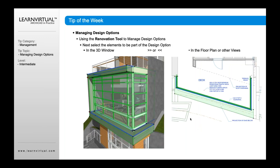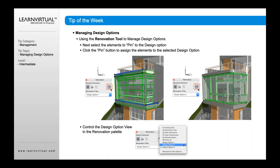Now, select the elements to assign to a design option — you can do this in 2D or 3D. Simply select the element, and once it's selected, click the pin button right here. That pins, or assigns, that particular element to the design option that is currently selected. So if I've selected this one and pinned it here, I can go to design option two, which turns that off, and then model a new design option. I pin that element to here, and now when I select those two options, it turns them on and off based upon which one I've selected.